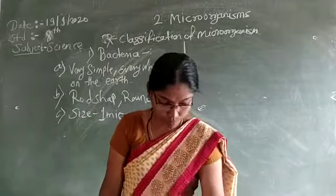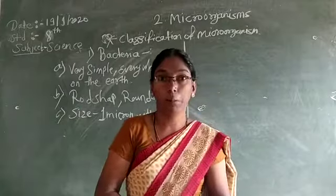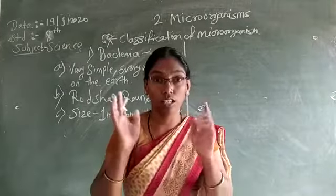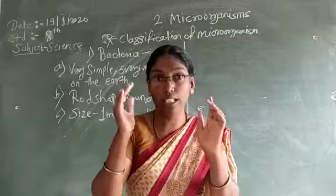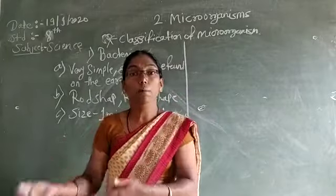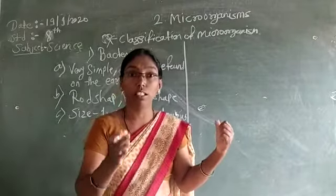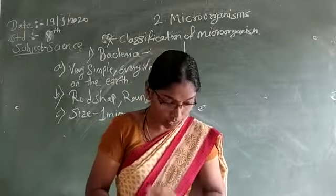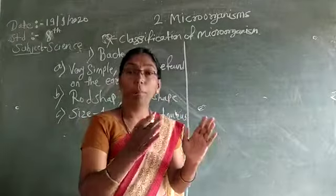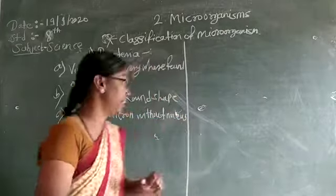Size is 1 micron without nucleus. Bacteria consist of a single cell or in the form of a chain or group of cells — meaning it is not just one cell but can be a group of cells. Unicellular means single cell, multicellular means a number of cells. So these bacteria have a single cell only or in the form of a chain or group of cells — meaning unicellular and also multicellular.